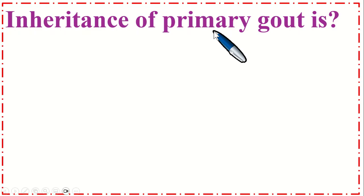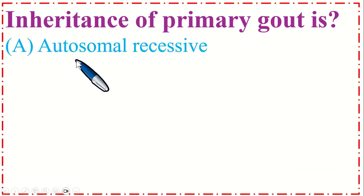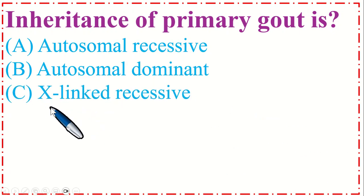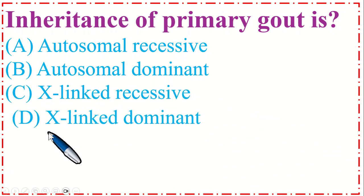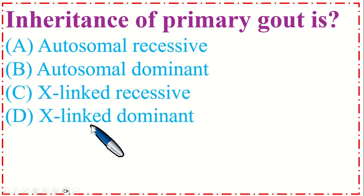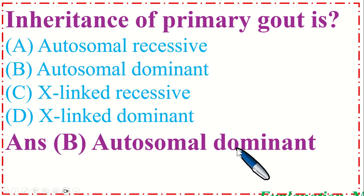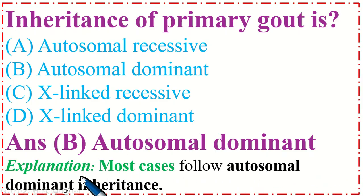Inheritance of primary gout is: Option A. Autosomal recessive, B. Autosomal dominant, C. X-linked recessive, and D. X-linked dominant. The correct option is B, autosomal dominant. Most cases follow autosomal dominant inheritance.